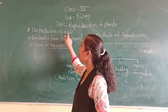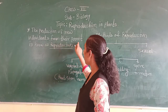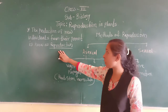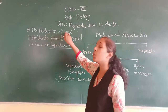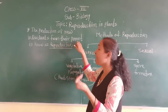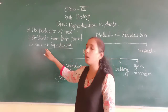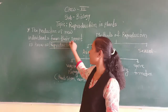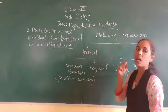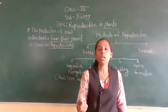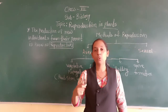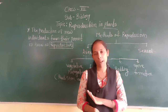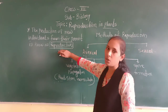The production of new individuals from their parents is known as reproduction. So, the production of new individuals from their parents — that process is known as reproduction. In this particular lesson we are going to discuss about reproduction in plants, meaning how plants give rise to new plants, or how plants are developed from the old plant. That is what we are calling reproduction.